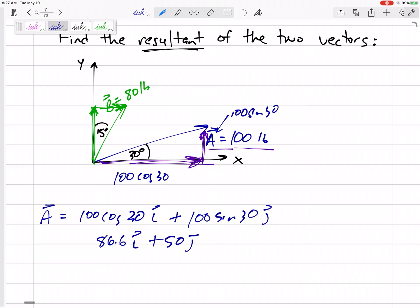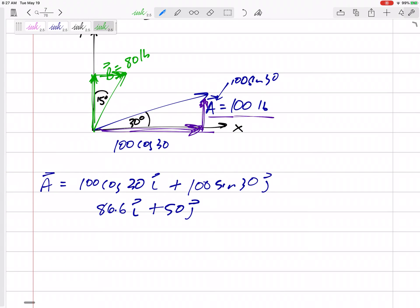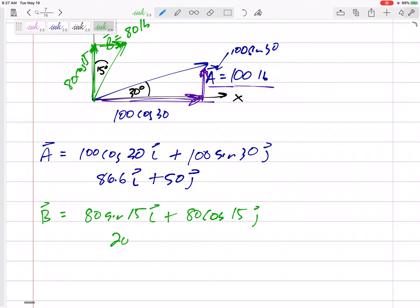Now this green B vector. This would be 80 cosine 15, that would be the j component. 80 cosine 15 would be j and 80 sine 15 would be i. That's 20.7 in the i plus 77.3 in the j.